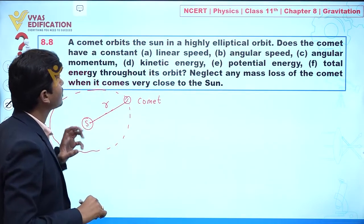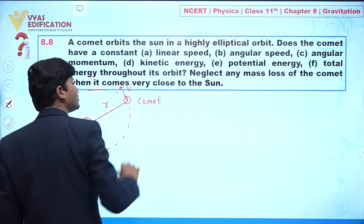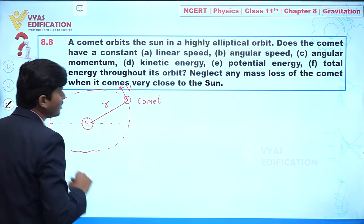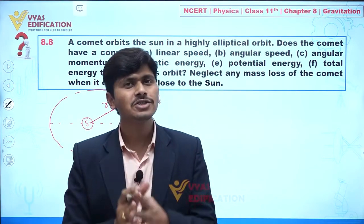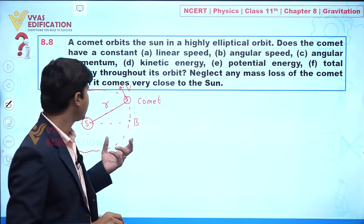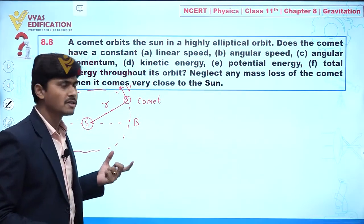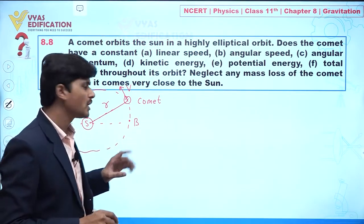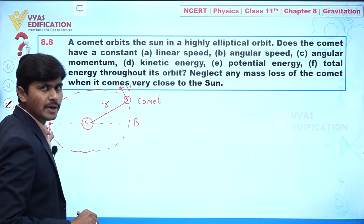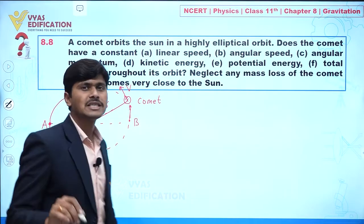Part (a): Does the comet have a constant linear speed? The comet is moving with velocity v. Now, one point on the orbit is very near to the sun, and another point is far away from the sun. All planets revolve around the sun, which is situated at one of the foci — not the center — of the ellipse.